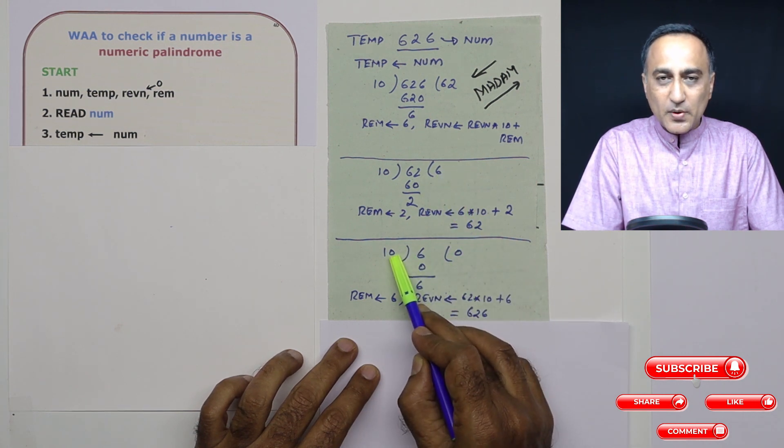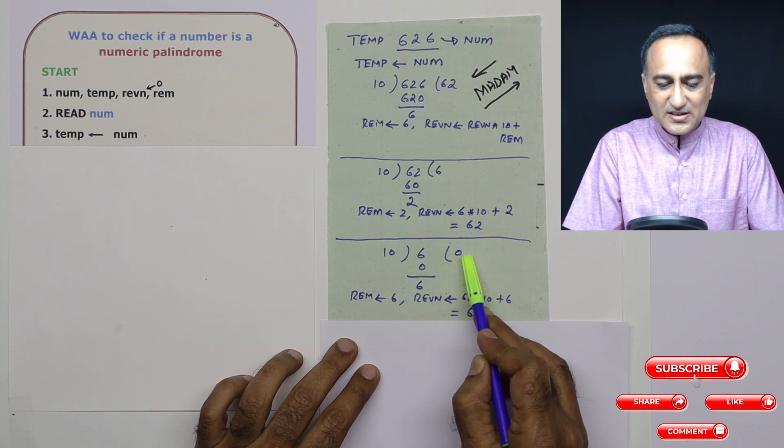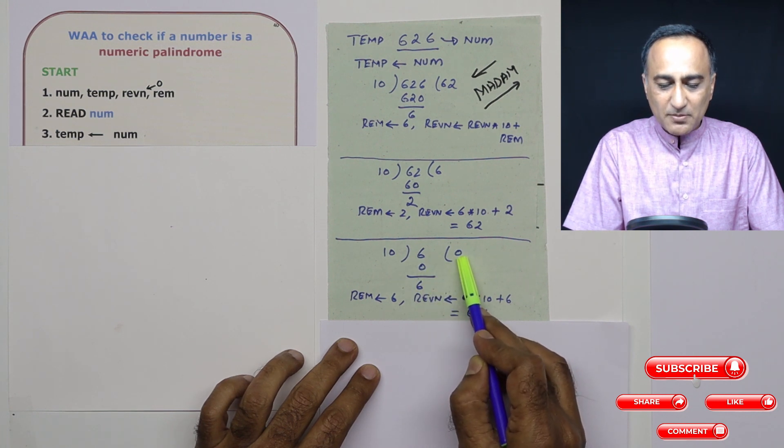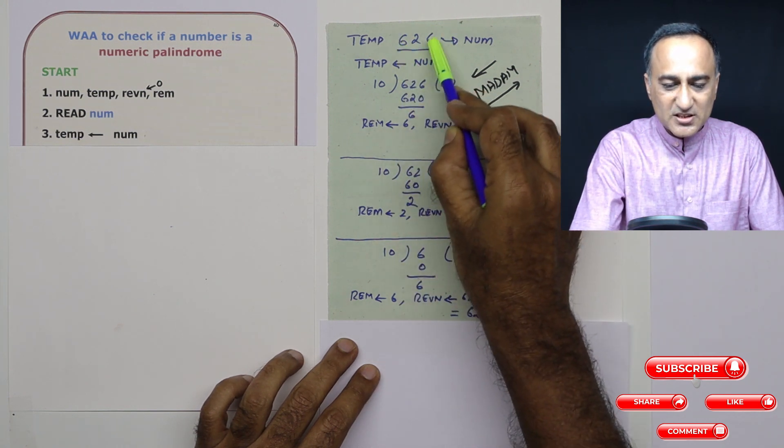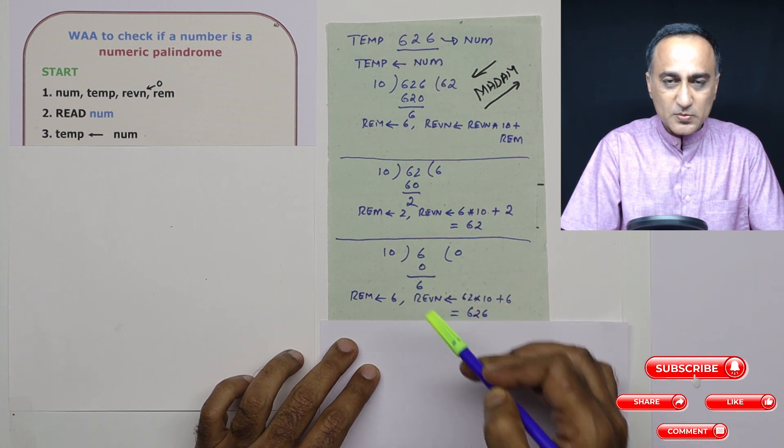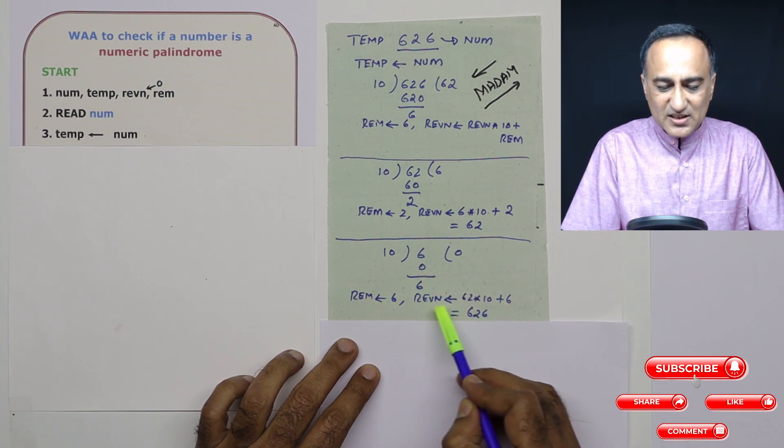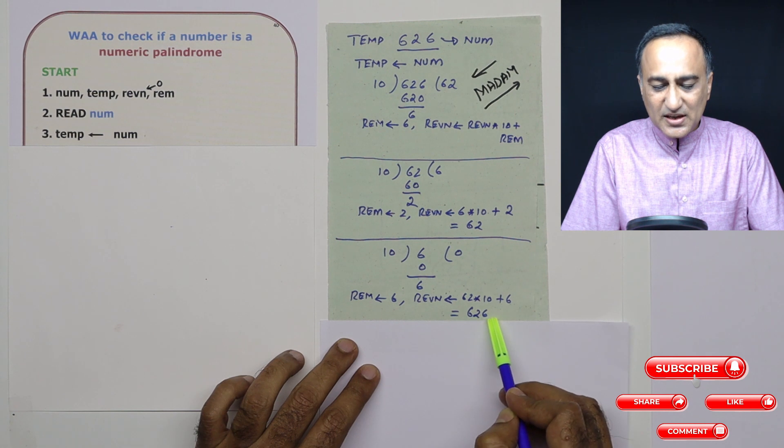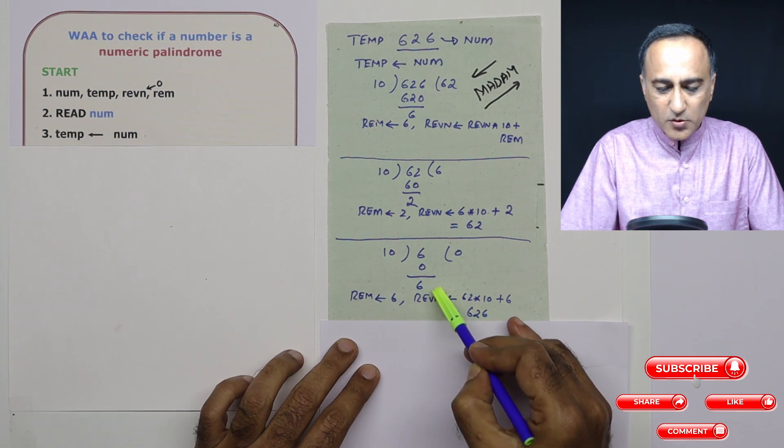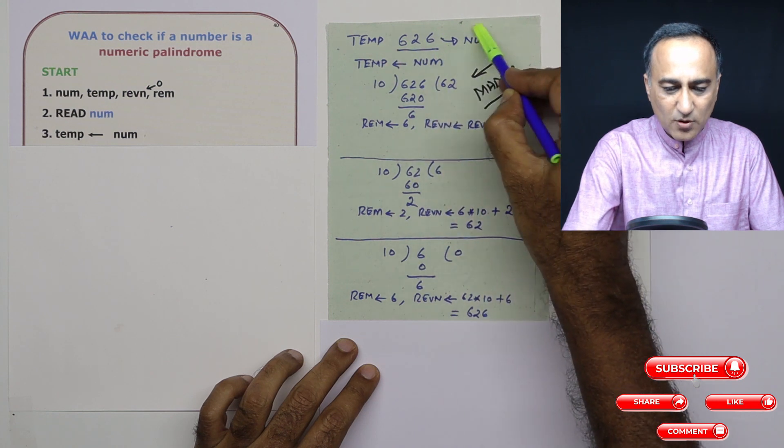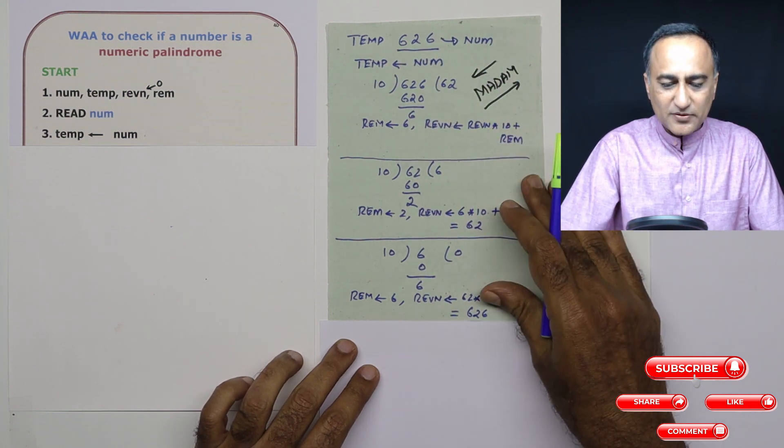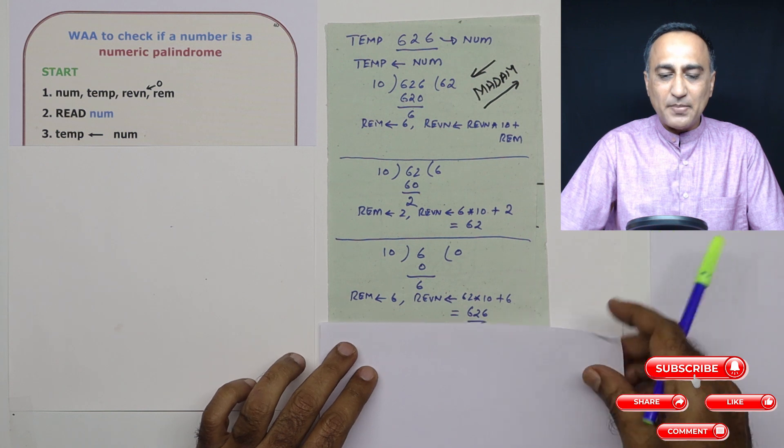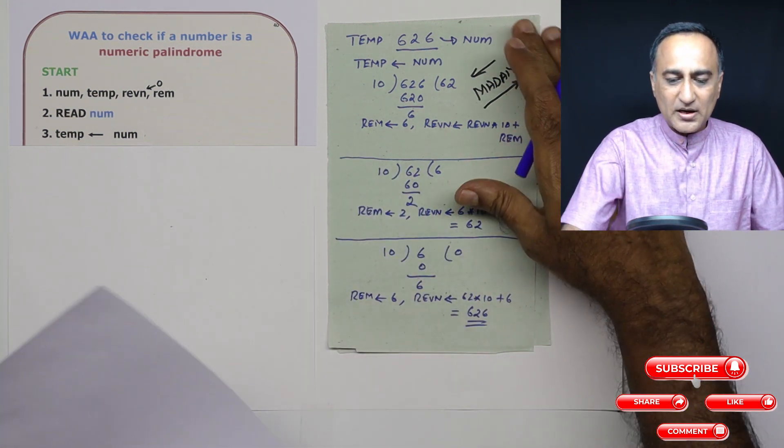When 6 is divided by 10, the remainder is 6 itself and the quotient is zero. So now temp has become zero. I have processed all three digits and I no longer need to continue this division process. So since remainder is 6, reverse number was 62 times 10, which is 620 plus 6, giving 626. Now I'm going to compare this reverse number with the original number. Since both of them are the same, I'm saying it's a numeric palindrome.